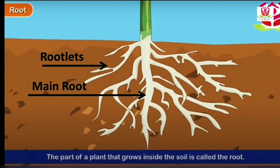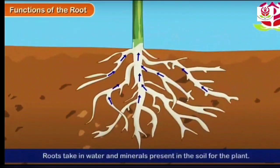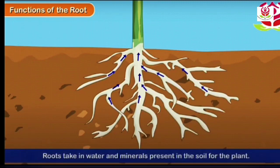Let's see the functions of the root. Roots take in water and minerals present in the soil for the plants. It absorbs 1% of water and 99% of water is released into the atmosphere, because of which our atmosphere is cool.